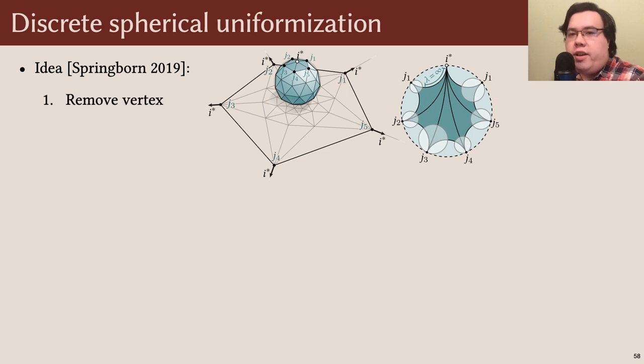We begin by removing a vertex from the input mesh, leaving us with a topological disk. We map that disk to a convex polygon in the plane, which we then stereographically project onto the sphere. We conclude by adding the removed vertex back into the north pole, yielding the desired sphere-inscribed polyhedron.